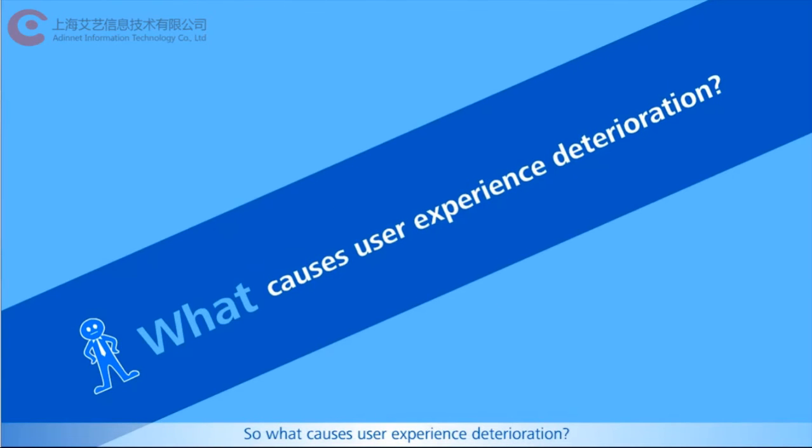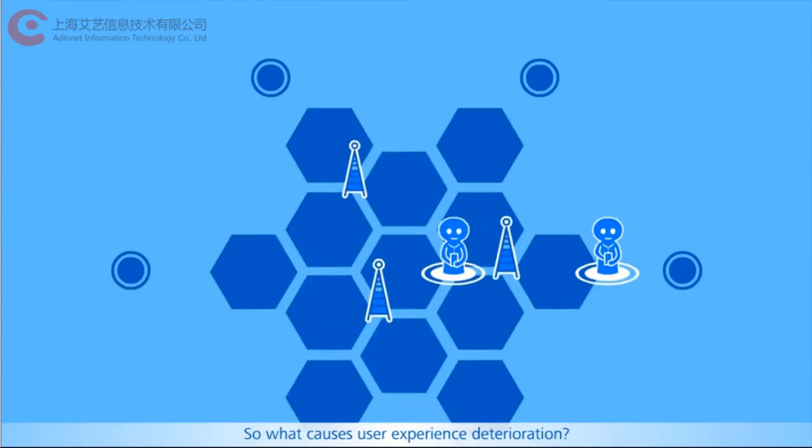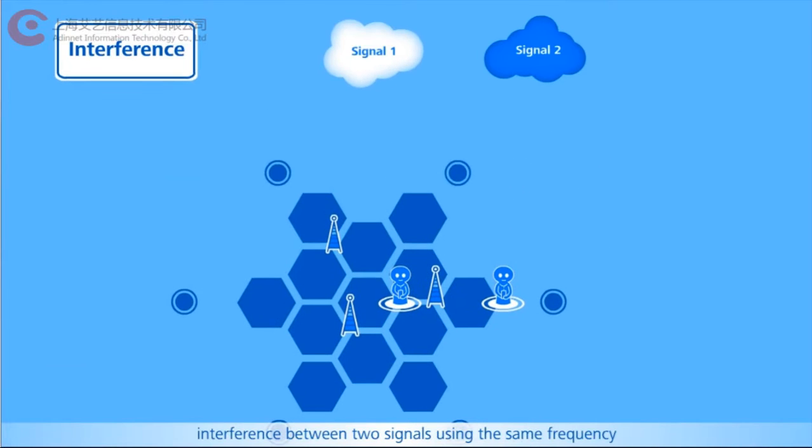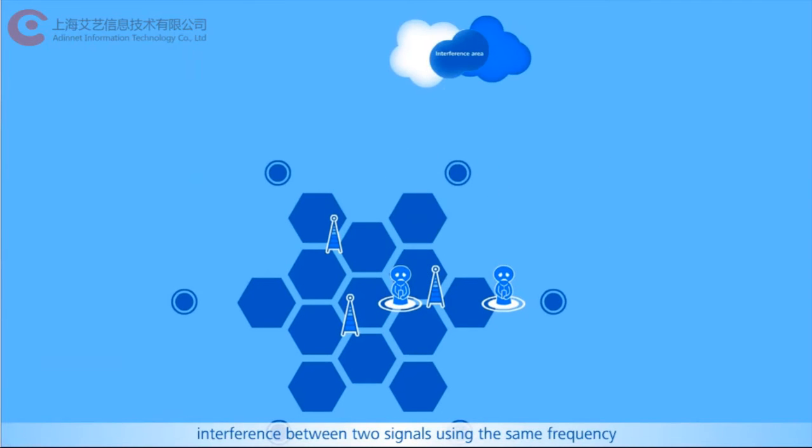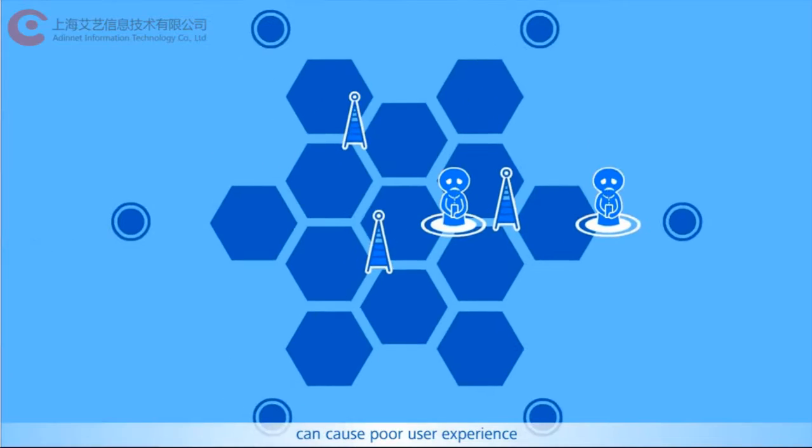So what causes user experience deterioration? At both the cell center and cell edge, interference between two signals using the same frequency can cause poor user experience.